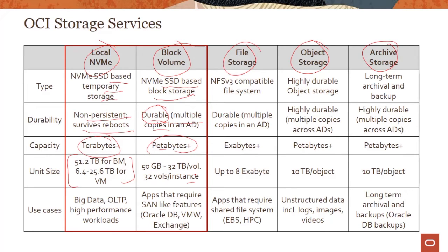The third storage service on OCI is file storage. This is an NFS V3-compatible file system and it's also durable within an availability domain. The capacity is in exabytes, and the use cases are applications that require a shared file system — for example, Oracle applications like EBS, HPC workloads, and similar scenarios.